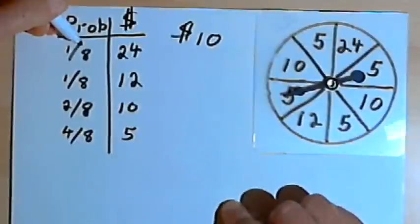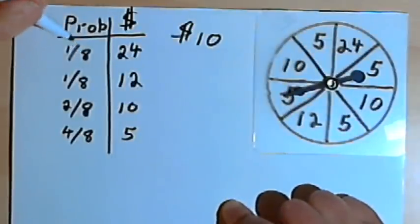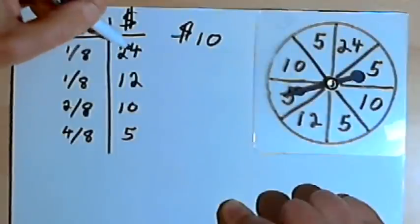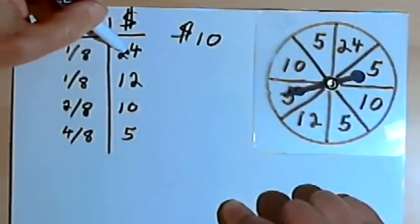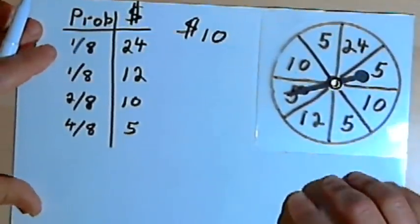Now, what I'm going to do is multiply each of the probabilities by the outcome, by the amount of money you get for that probability. So let's see what we get.